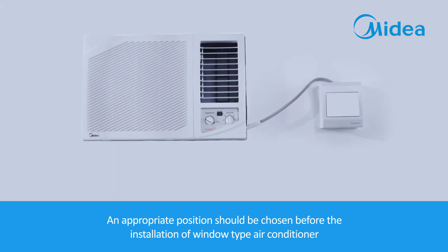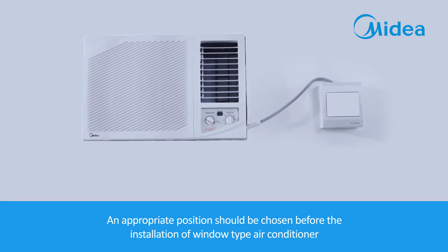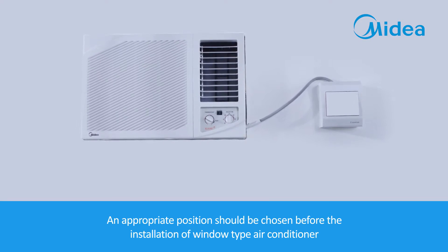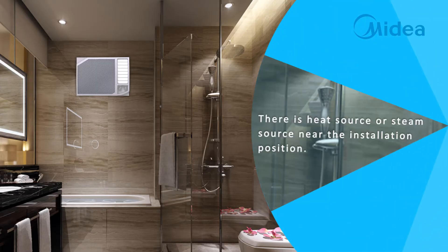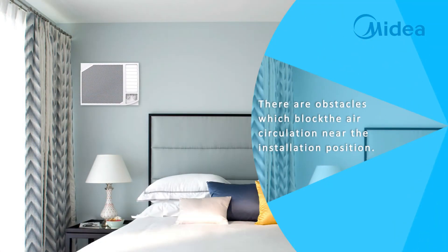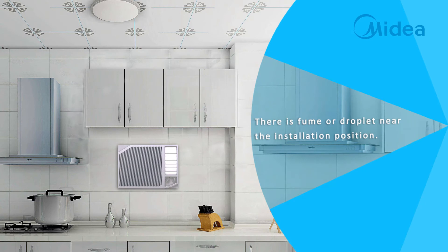An appropriate position should be chosen before the installation of a window type air conditioner. Here are some inappropriate positions of installation: there is a heat source or steam source near the installation position, or there are obstacles which block the air circulation near the installation position, or there is fume or droplet near the installation position.